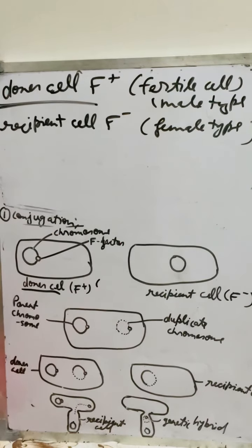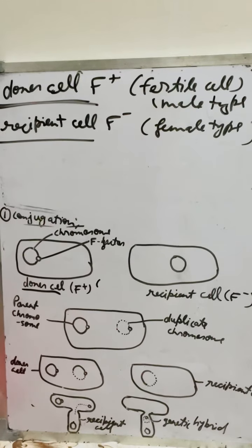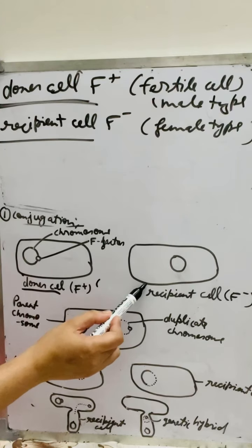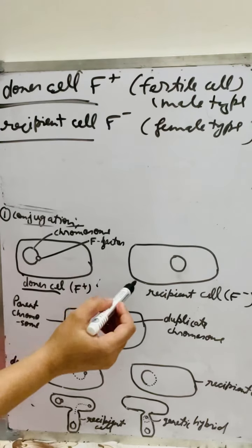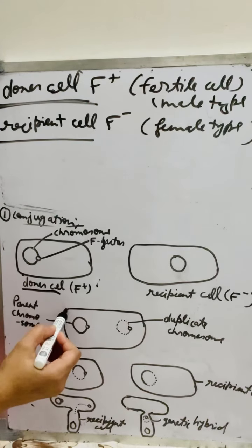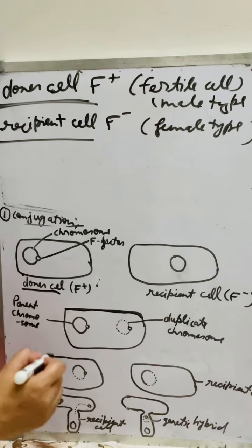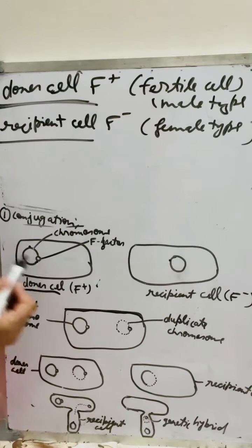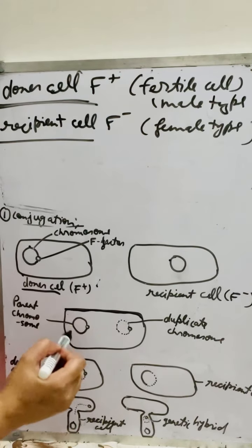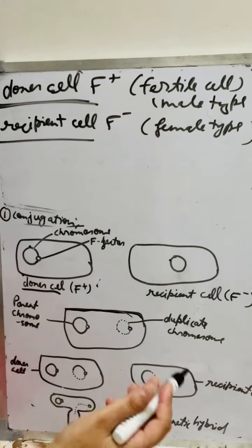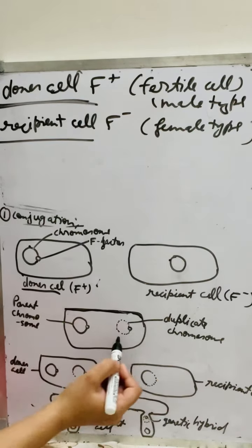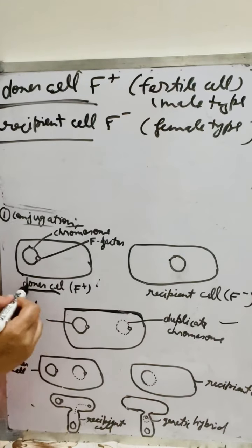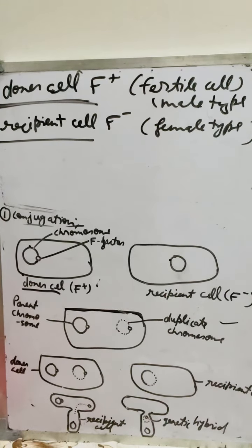Now, the donor cell is F-positive and the recipient cell is F-negative. Before fusing, the donor and recipient cells start replication and make a duplicate copy of the chromosome. After replication, a duplicate copy of the chromosome is made. This duplicate copy will be the parental chromosome in the next step.